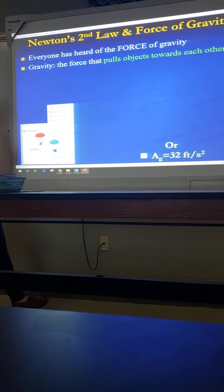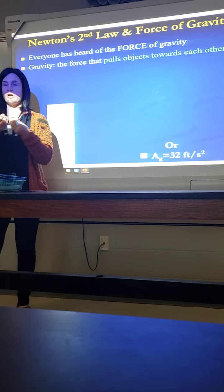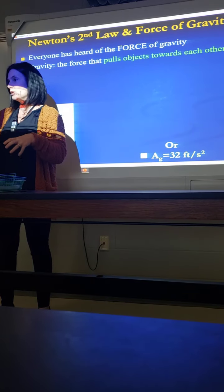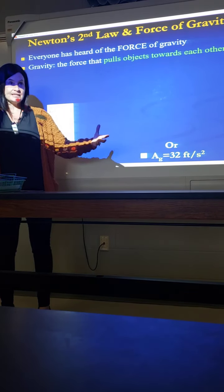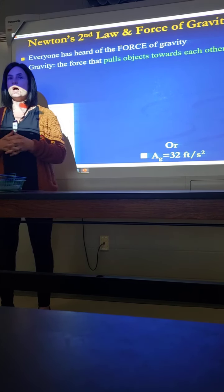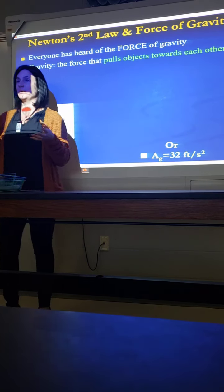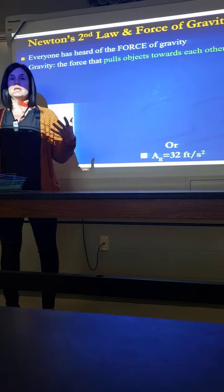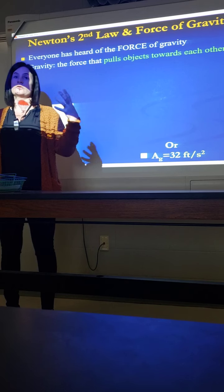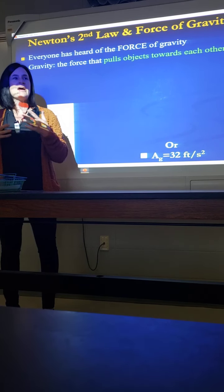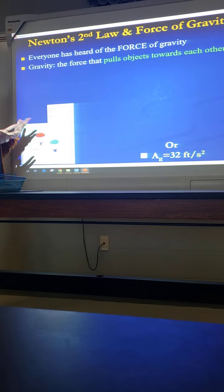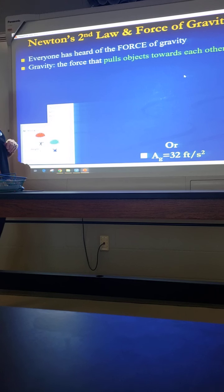Gravity is a force that pulls objects towards each other. Things are going to be gravitating towards the more massive object, which is why we are attracted to planet Earth — because Earth is extremely massive and we are not massive in comparison. That's also why all the planets are being pulled to the sun, because relative to the sun the planets are tiny little specks. Whatever is the most massive object is what's exerting the greatest pull.